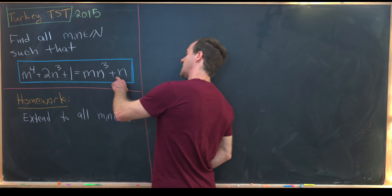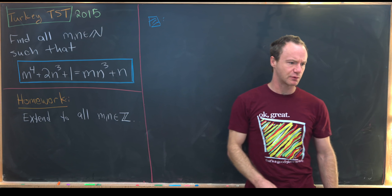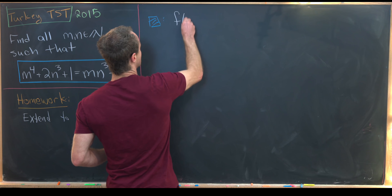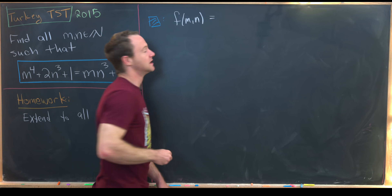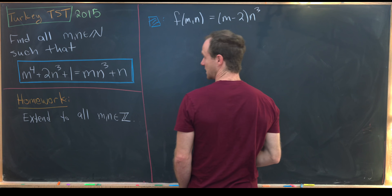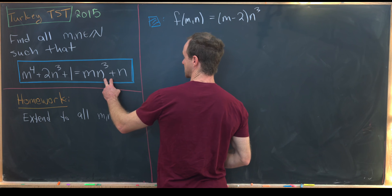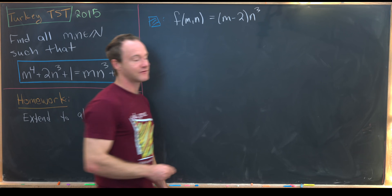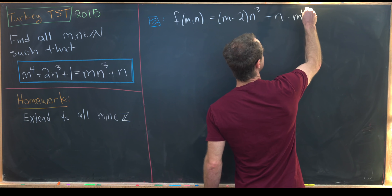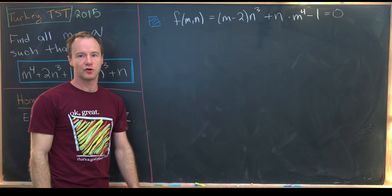I'm going to take this equation and rewrite it so it looks like we're finding the roots of a two-variable polynomial. I'll call that polynomial f(m,n), which will have the form: m minus 2 times n cubed — we get that by moving 2n cubed to the right side — plus n, minus m to the fourth, minus 1, equals 0.